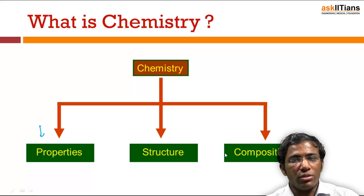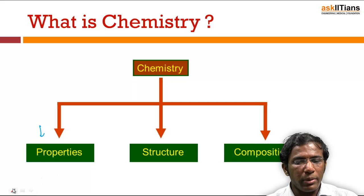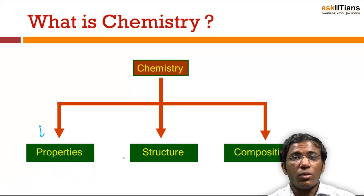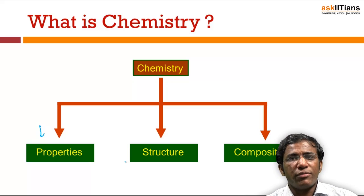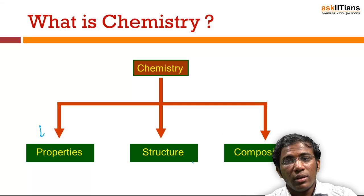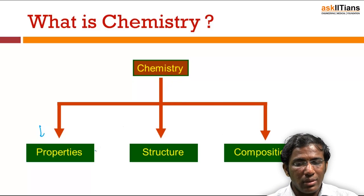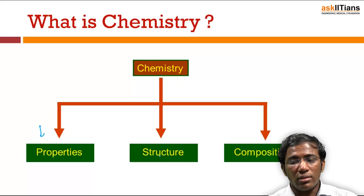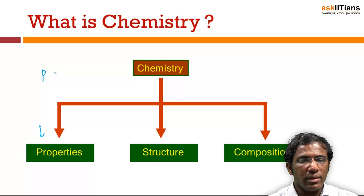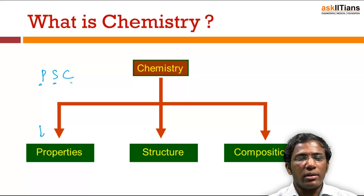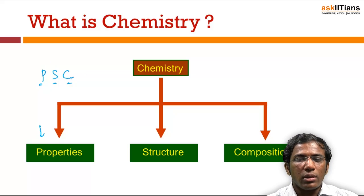We'll also learn about composition. If I take a particular compound — what atoms it contains and what the relative amounts are in which the atoms are present. For example, water contains hydrogen and oxygen in a fixed ratio — that is the composition of water. Similarly in chemistry we learn about the composition of many other chemical substances. So basically in chemistry we study these three things: properties, structure, and composition — P.S.C.